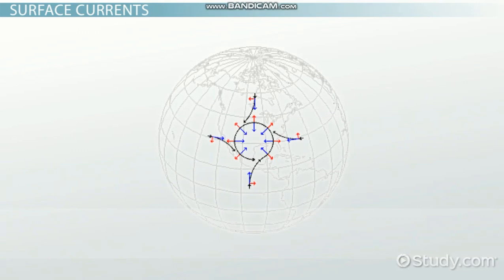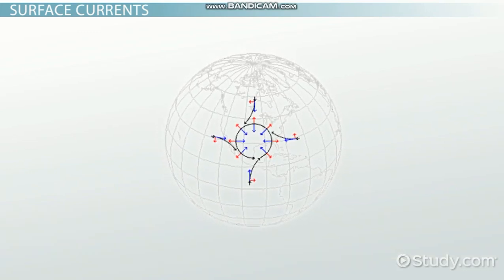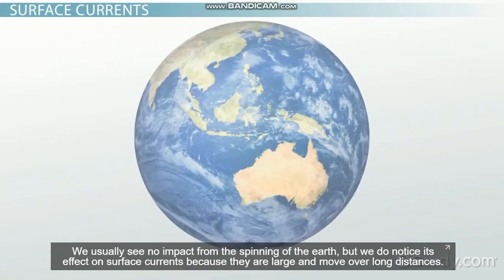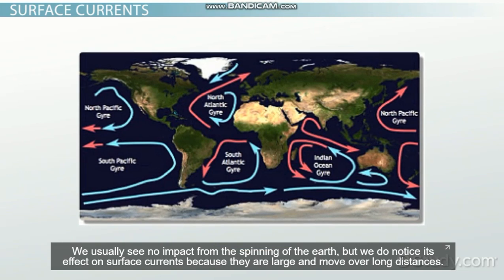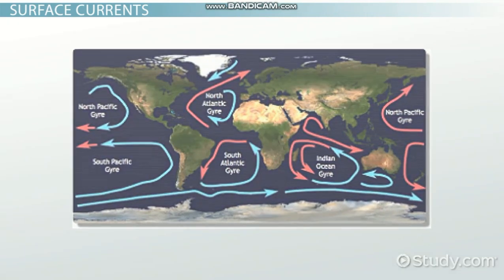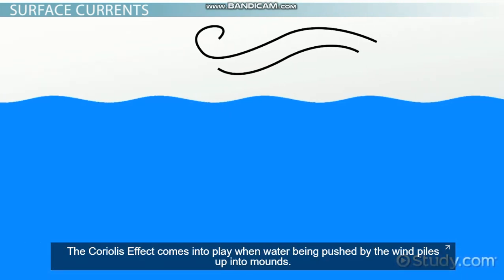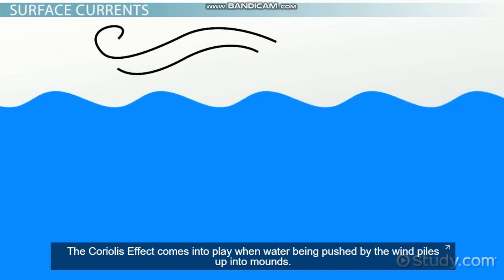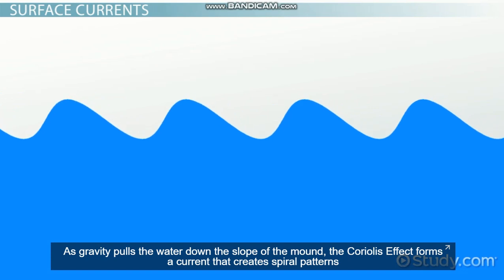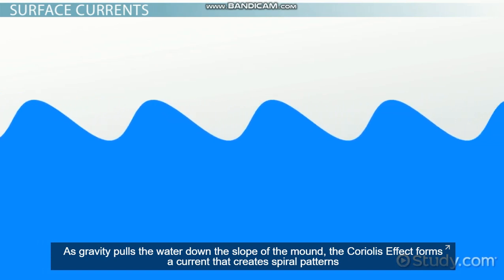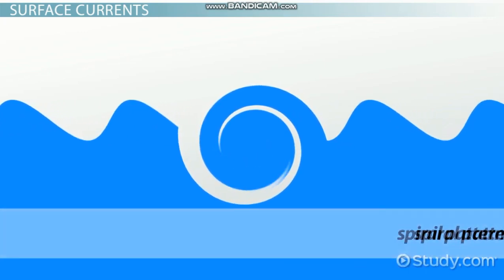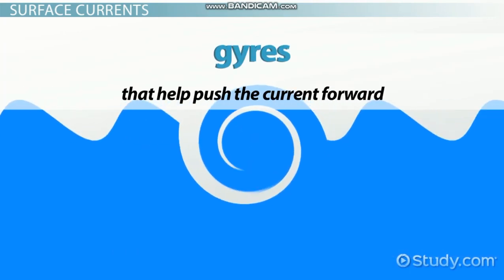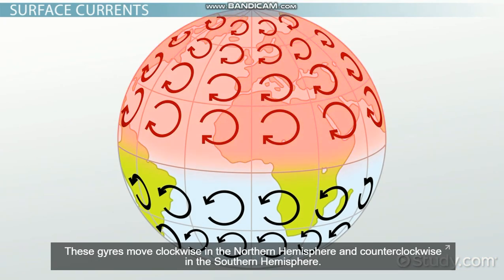Coriolis effect. The spinning of the Earth deflects movement. This is called the Coriolis effect. We usually see no impact from the spinning of the Earth, but we do notice its effect on surface currents, because they are large and move over long distances. The Coriolis effect comes into play when water being pushed by the wind piles up into mounds. As gravity pulls the water down the slope of the mound, the Coriolis effect forms a current that creates spiral patterns, called gyres, that help push the current forward. These gyres move clockwise in the northern hemisphere and counterclockwise in the southern hemisphere.